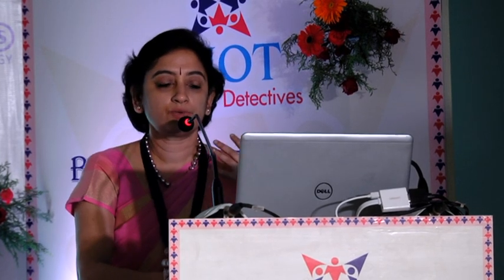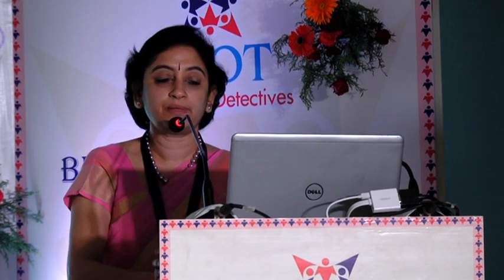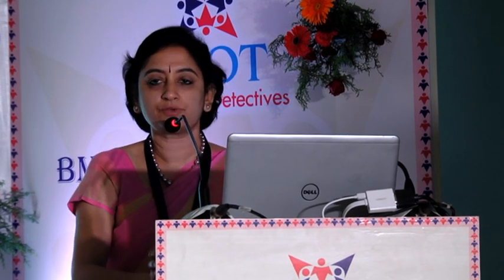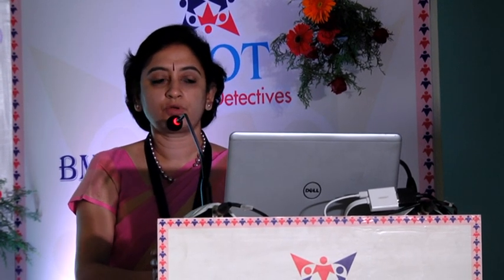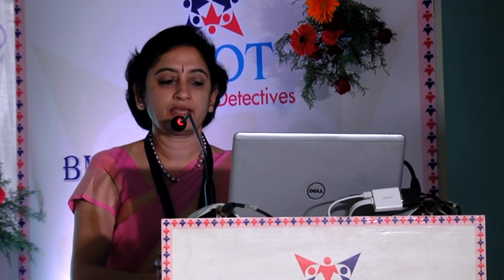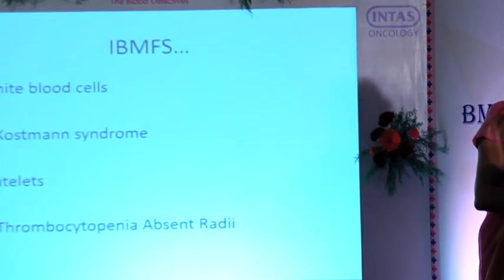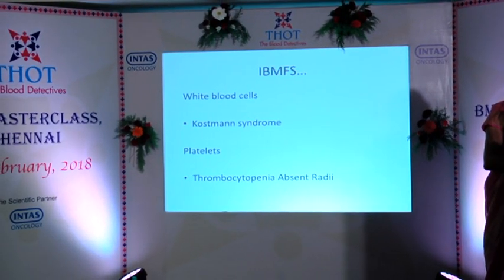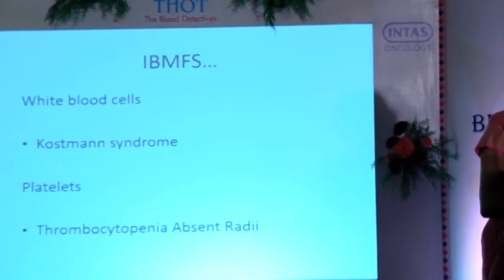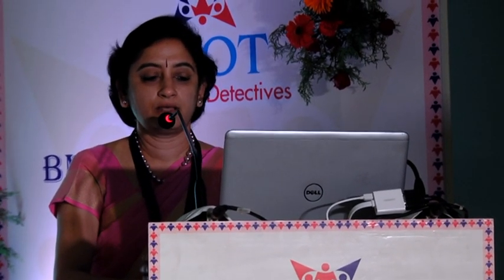If you see a child with marrow failure, you have to look for subtle dysmorphism, family deaths, infant deaths in the family. Look carefully at history and drug history — hepatitis A is a big problem in our country causing aplastic anemia. PNH and autoimmunity are not so common in children. For inherited marrow failure syndromes affecting red cells, there is Diamond-Blackfan anemia; for white cells, Kostmann syndrome; for platelets, TAR syndrome — which gets better by the first birthday and does not require transplant in the newborn period.